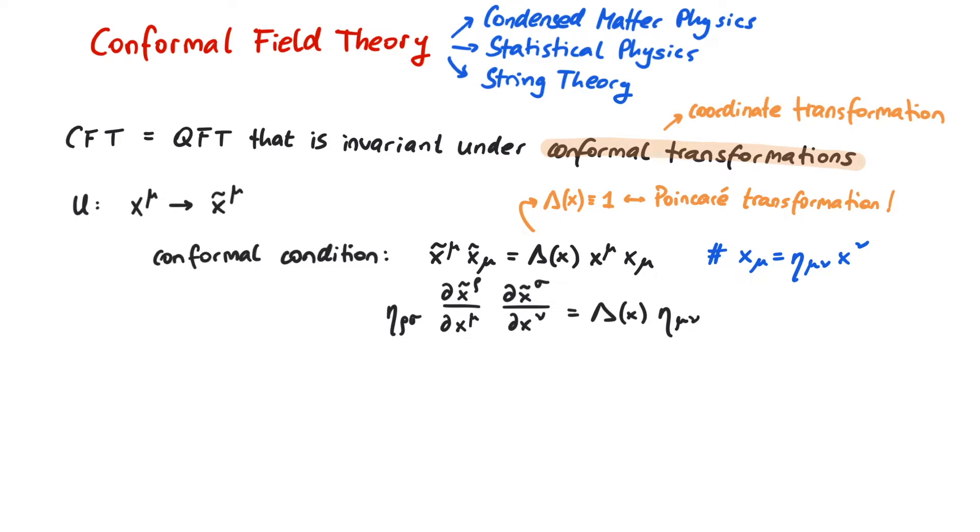Let's now consider infinitesimal transformations. We assume that x tilde mu is given by x mu plus epsilon mu. This means that we presume that x mu does not change a lot, just by a very small epsilon. Note that this epsilon is a function of spacetime, that is, the transformation acts differently depending on where we are.